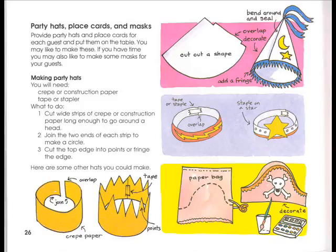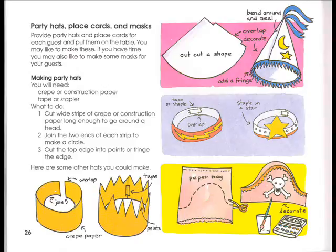Party hats, place cards, and masks: Provide party hats and place cards for each guest and put them on the table. You may like to make these. If you have time, you may also like to make masks for your guests. Making party hats: You will need crepe or construction paper, tape or stapler. Cut wide strips of crepe or construction paper long enough to go around a head. Join the two ends to make a circle. Cut the top edge into points or a fringe. Other hat styles include: bend around and staple, overlap and decorate with a fringe, taper and staple on a star, or decorate a paper bag.